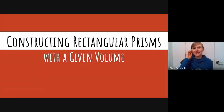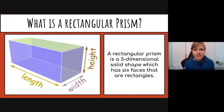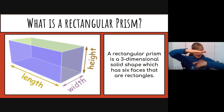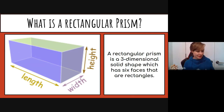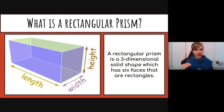In this lesson you are going to learn how to construct rectangular prisms with a given volume. First, we need to make sure we're on the same page with what a rectangular prism is. A rectangular prism is a 3D solid shape which has six faces that are rectangles. A cube is also a rectangular prism because a square is a rectangle, and all six of its faces are rectangles.